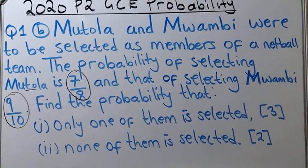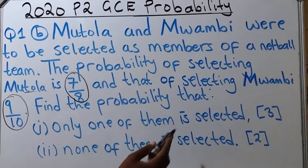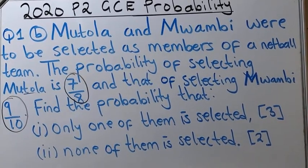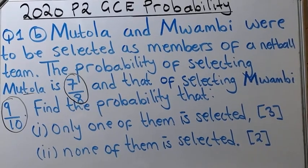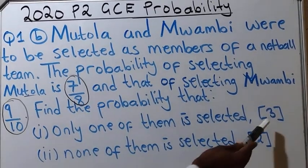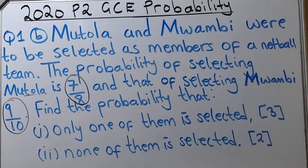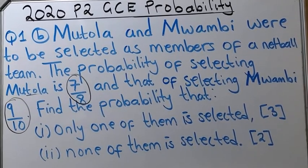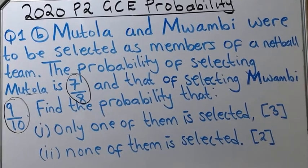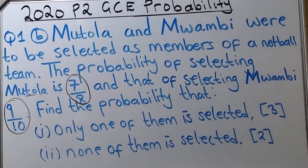The question asks us to find the probability that only one of them is selected. There are 3 marks allocated to this question. The second part asks us to find the probability that none of them is selected.